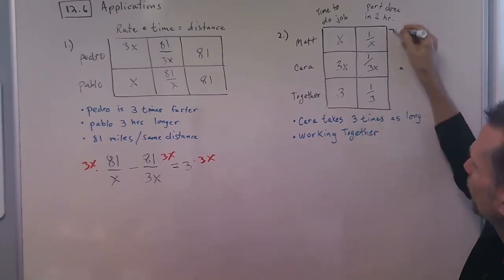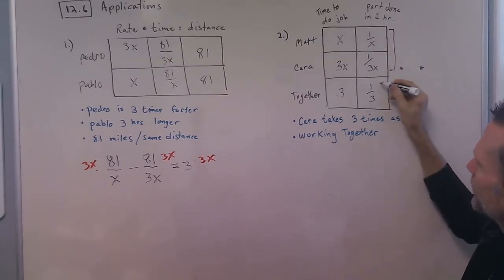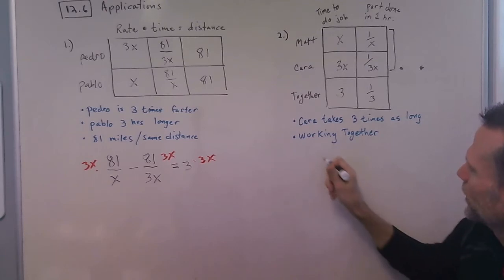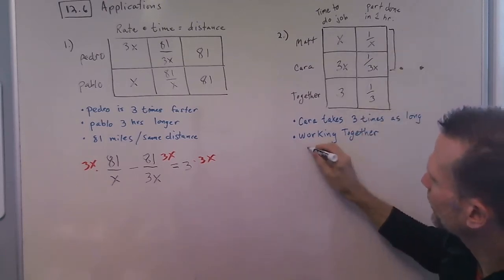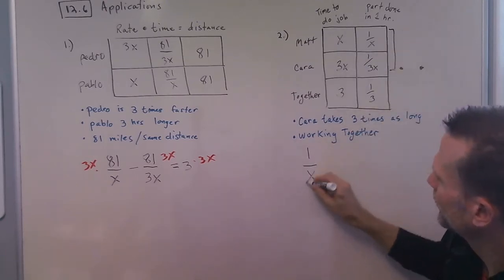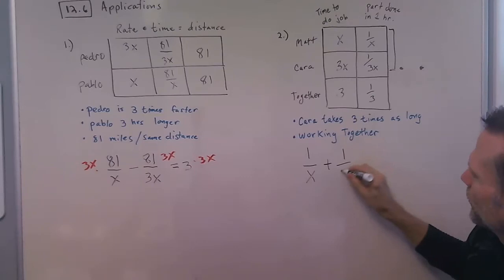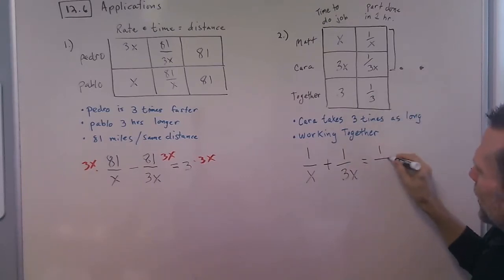These two are working together to complete this task, so we can write our equation by taking this column and say, okay, we have the part that Matt got done in one hour plus the part that Kara got done in one hour equals the amount working together done in one hour.